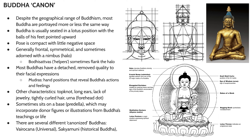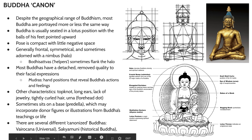Often when you see Buddha figures, they will have different hand positions called mudras. The position and articulation of the hands will mean different things. For example, if a hand is touching the ground, that usually symbolizes a connection with the earth. Hands brought in close around the bottom of the stomach are usually associated with the meditation gesture. There are lots and lots of different mudras.